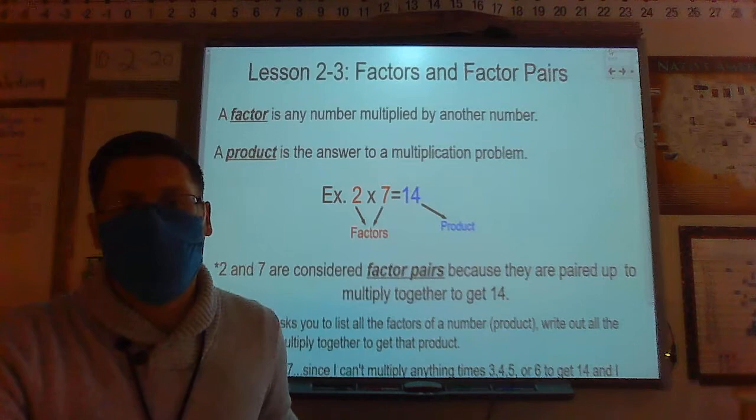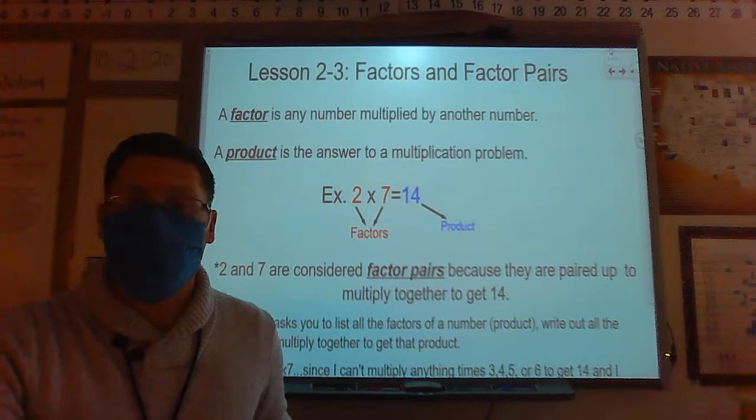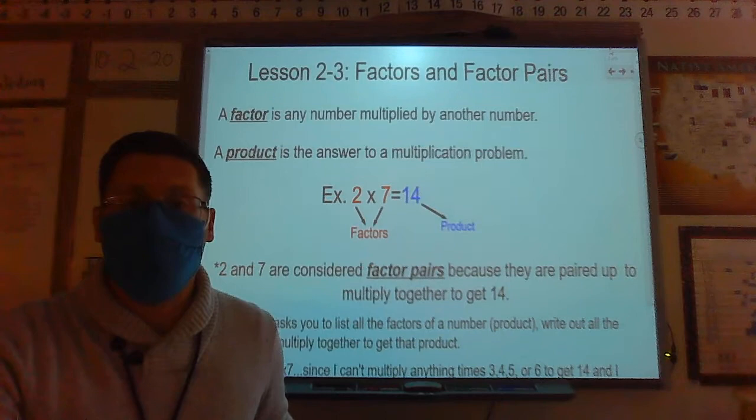So for example, if I had 2 times 7 equals 14, my factors would be 2 and 7 because they multiply together. 14 would be my product because it's the answer to my multiplication problem.